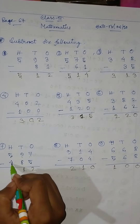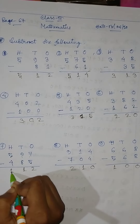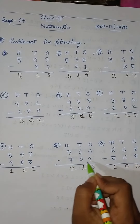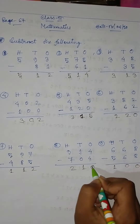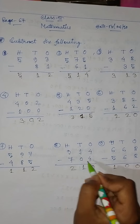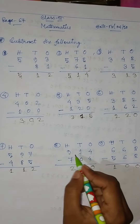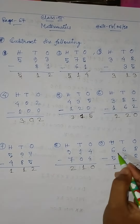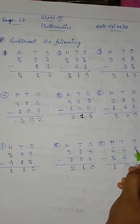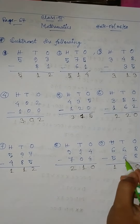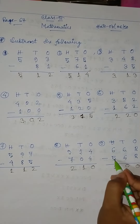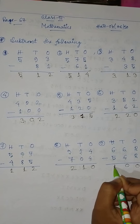And then 5 minus 4 equal to 1. Okay, then 668 minus 568: 8 minus 8 equal to 0, 6 minus 6 equal to 0, 6 minus 5 equal to 1. Okay.